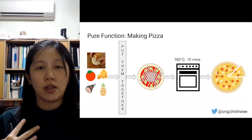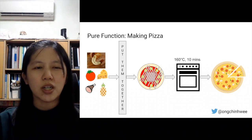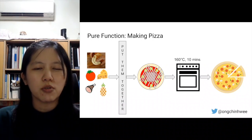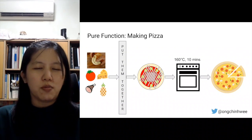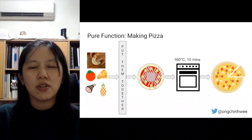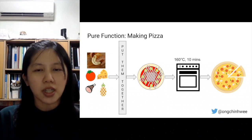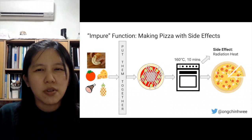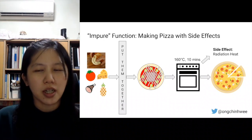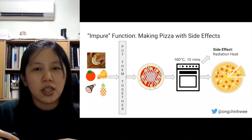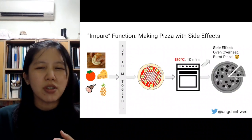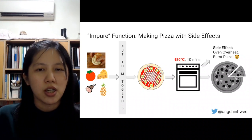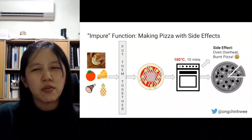Let's use the analogy of making pizza. We have dough, tomato, cheese, and pineapple — put them together, into the oven at 160 degrees for 10 minutes, and we expect pizza. In the ideal scenario, this is a pure function. But in the real world, making pizza is an impure function because it causes side effects. The process produces radiation heat from the oven affecting the environment, and repeated use may cause the oven to overheat — baking at 180 degrees instead of 160 — resulting in burnt pizza. That is a side effect of an impure function.